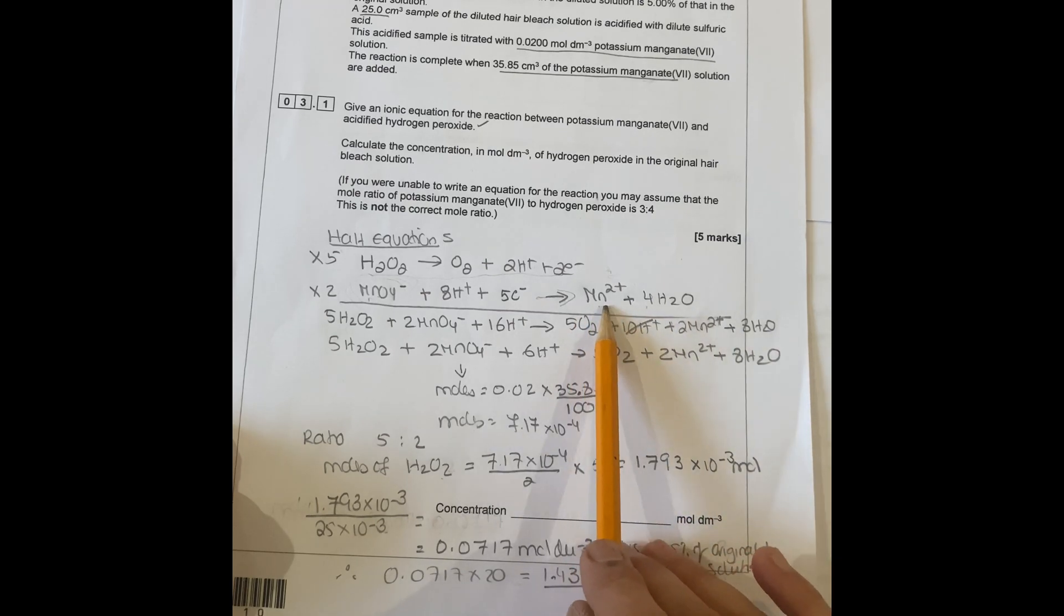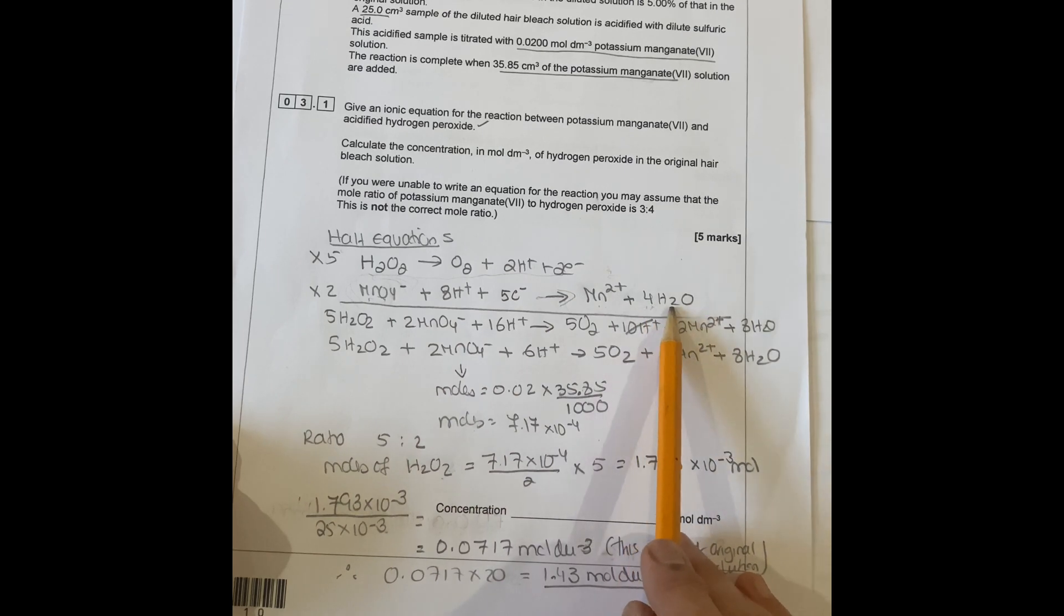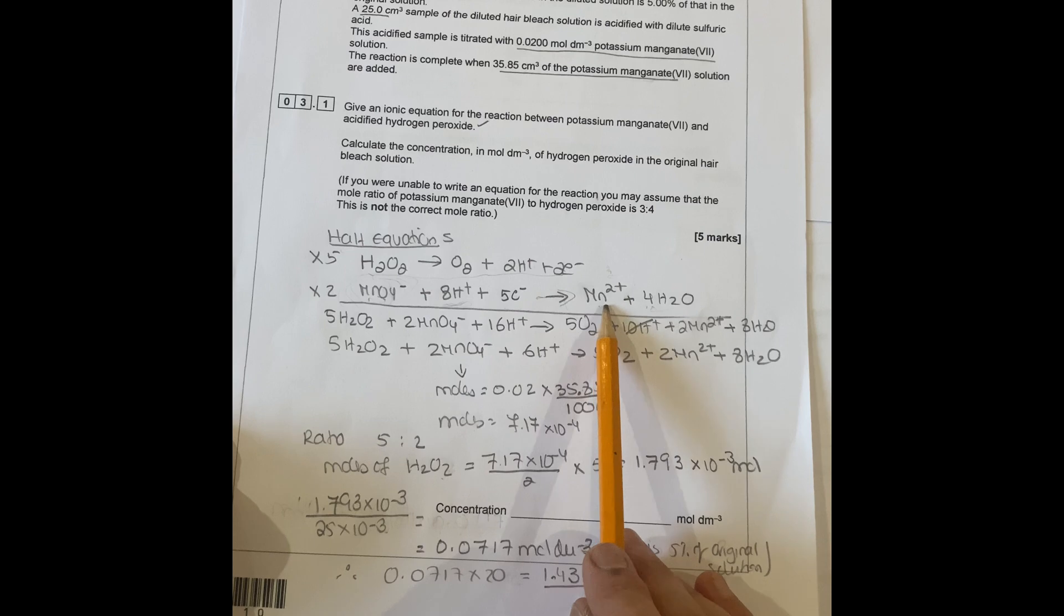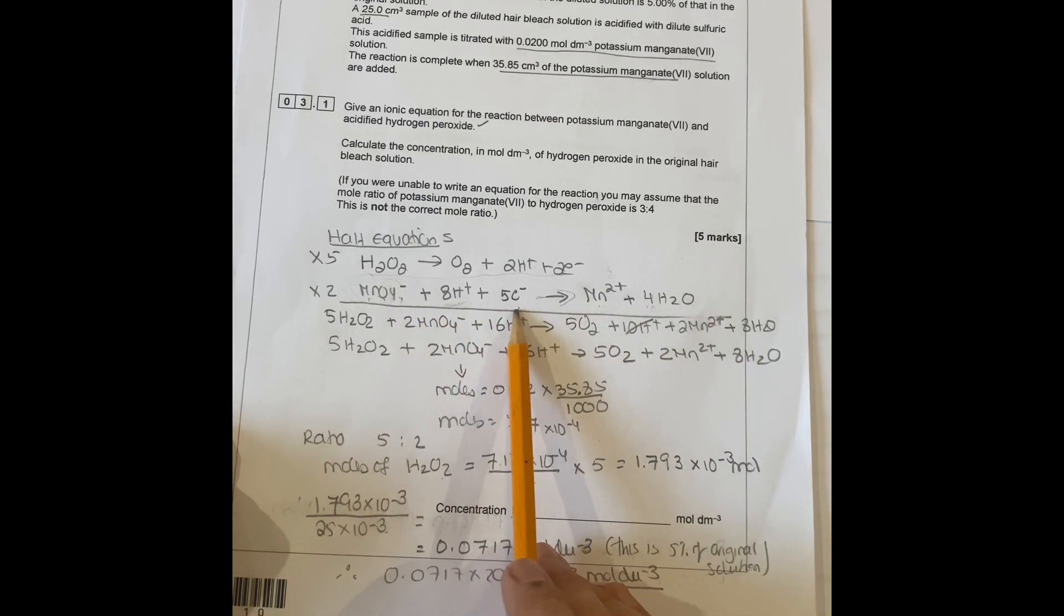You've got four oxygens, so you put four water. You've got eight hydrogens, so put eight H+. Then you have 2+ charge here and this is 8+ minus 1, 7+, 7 minus, so you add five electrons.